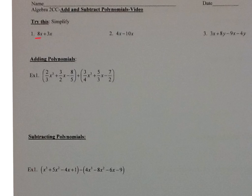Number one is 8x plus 3x. Those are like terms because they have the same variable and the same exponent — they're both x to the first power. All you do is add or subtract the coefficients, the numbers in front. So 8x plus 3x is 11x. You don't do anything to the exponents, because remember you don't add exponents unless you multiply — remember the laws of exponents. Over here we have 4x minus 10x, same variable, same exponent, so 4 minus 10 is negative 6x.